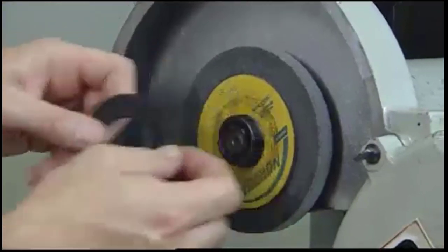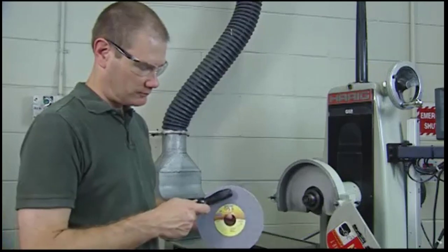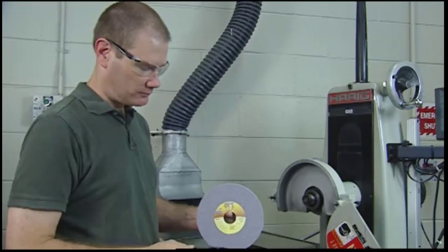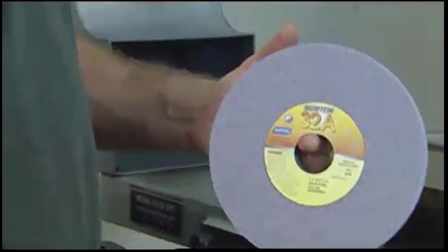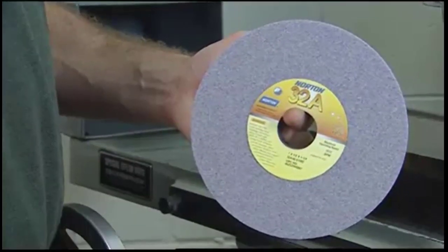Once that's finished, perform a ring test on the new wheel by suspending it on a finger and lightly tapping it with a non-metallic object, like a wooden or plastic screwdriver handle. The wheel should produce a clear, ringing sound.